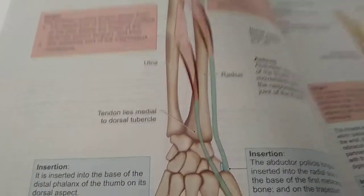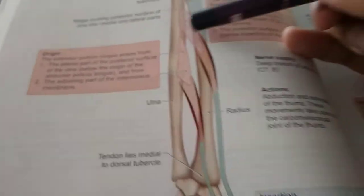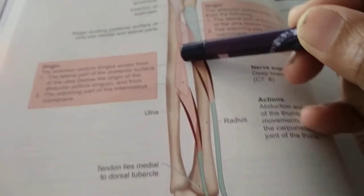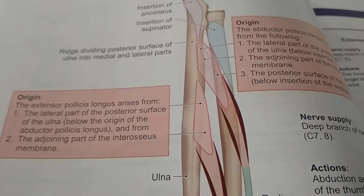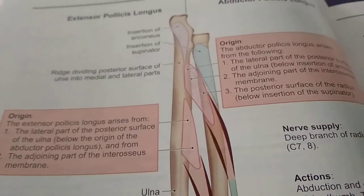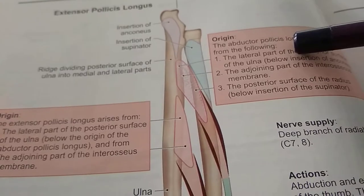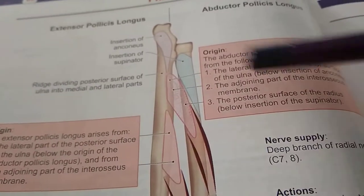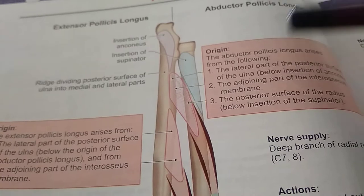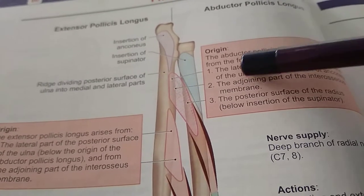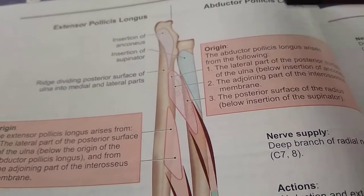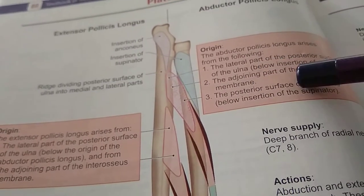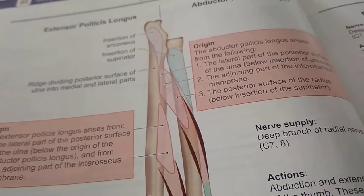What are they showing here? This muscle is the abductor pollicis longus - it arises from the following: the lateral part, the adjoining part of the interosseous membrane, and the posterior surface of the radius.